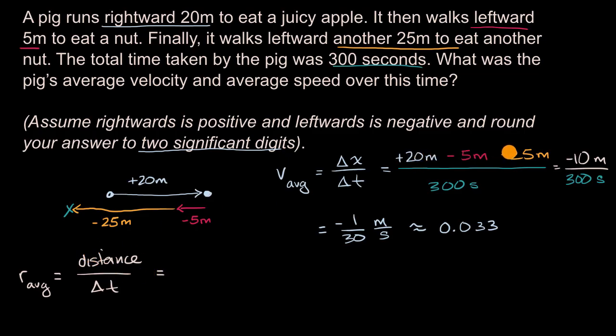So what's our distance traveled? What's going to be the absolute value of each of these numbers? So it's going to be 20 meters plus 5 meters plus 25 meters. Notice there's a difference here. We're not subtracting the 5 and the 25. We're just adding all of that. We just care about the magnitudes.